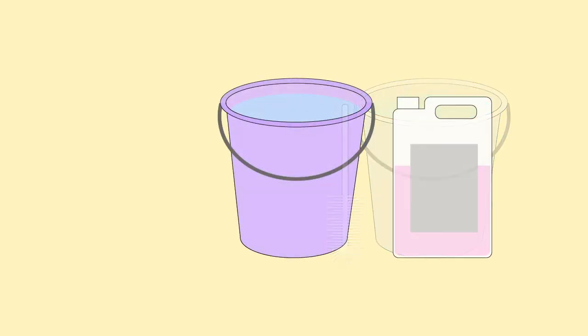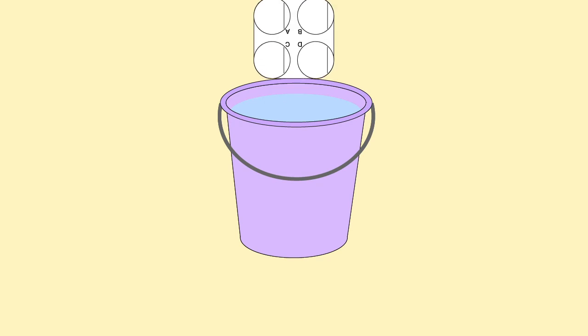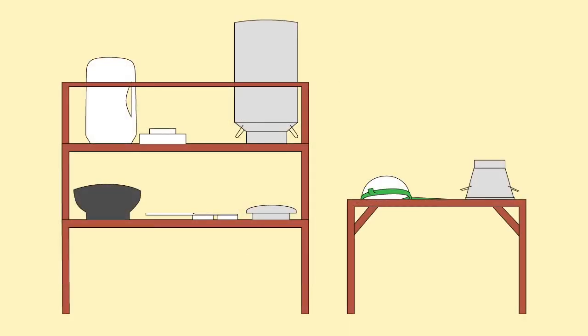The water plus disinfectant. Put the washed utensils into the disinfectant water. Make sure all surfaces are in contact with the disinfectant. Allow to dry upside down and well ventilated.